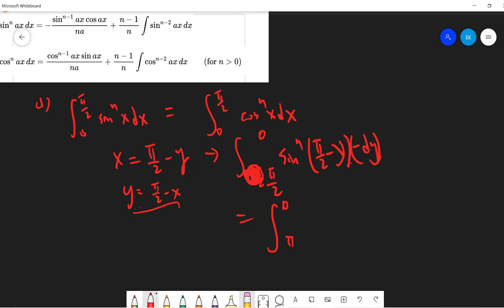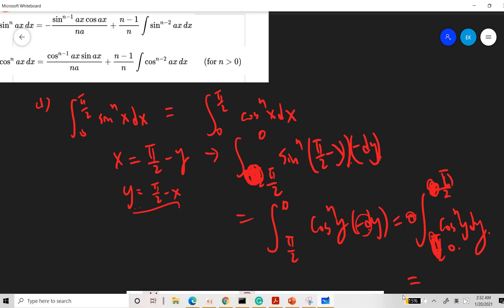So we get the integral from 0 to pi over 2 of cosine to the n power y times negative dy. There's a minus here, so we can pull that out: integral from 0 to pi over 2 of cosine to the n y dy. Then finally you just flip it, and that's it.